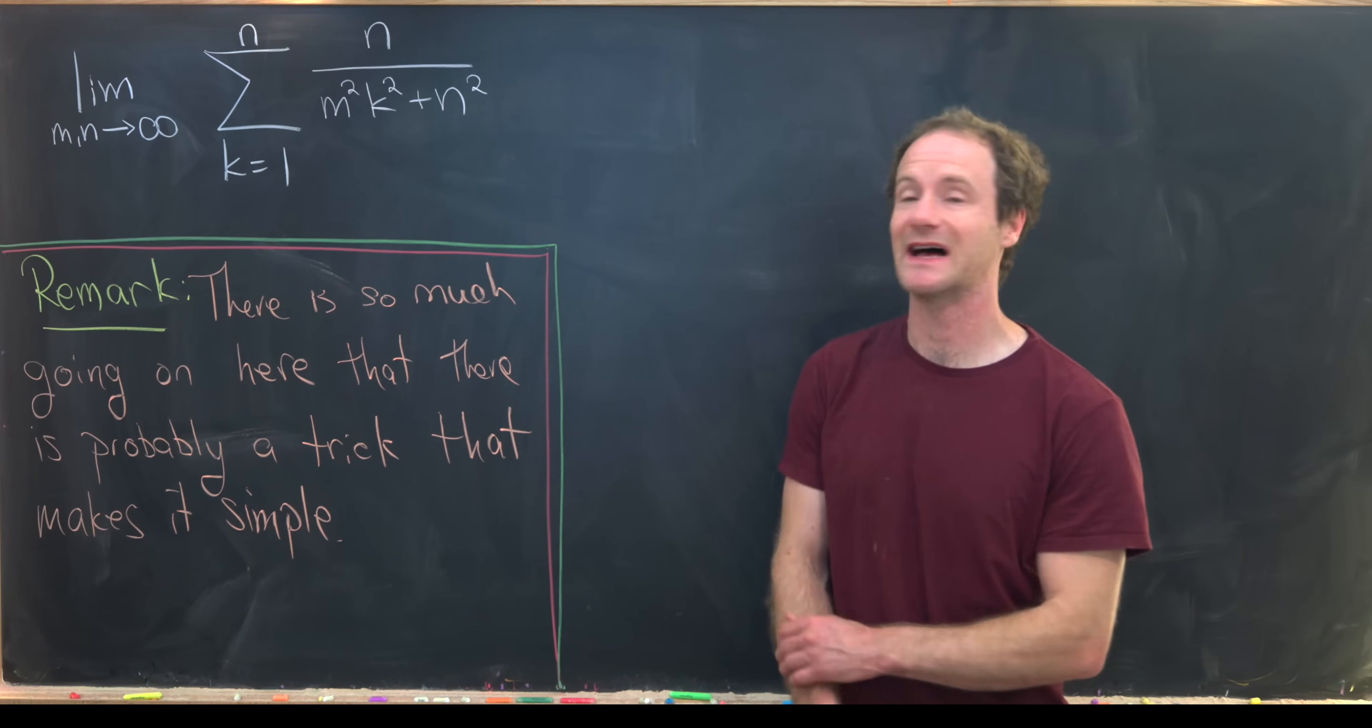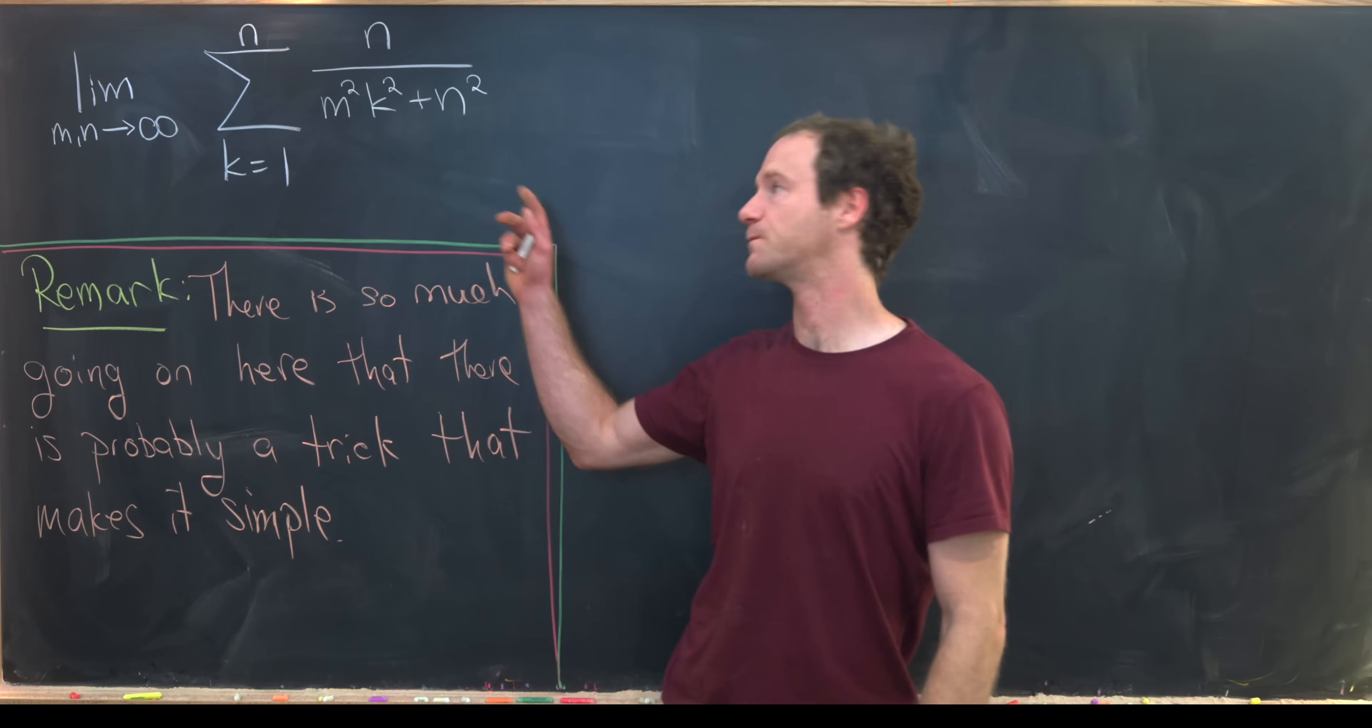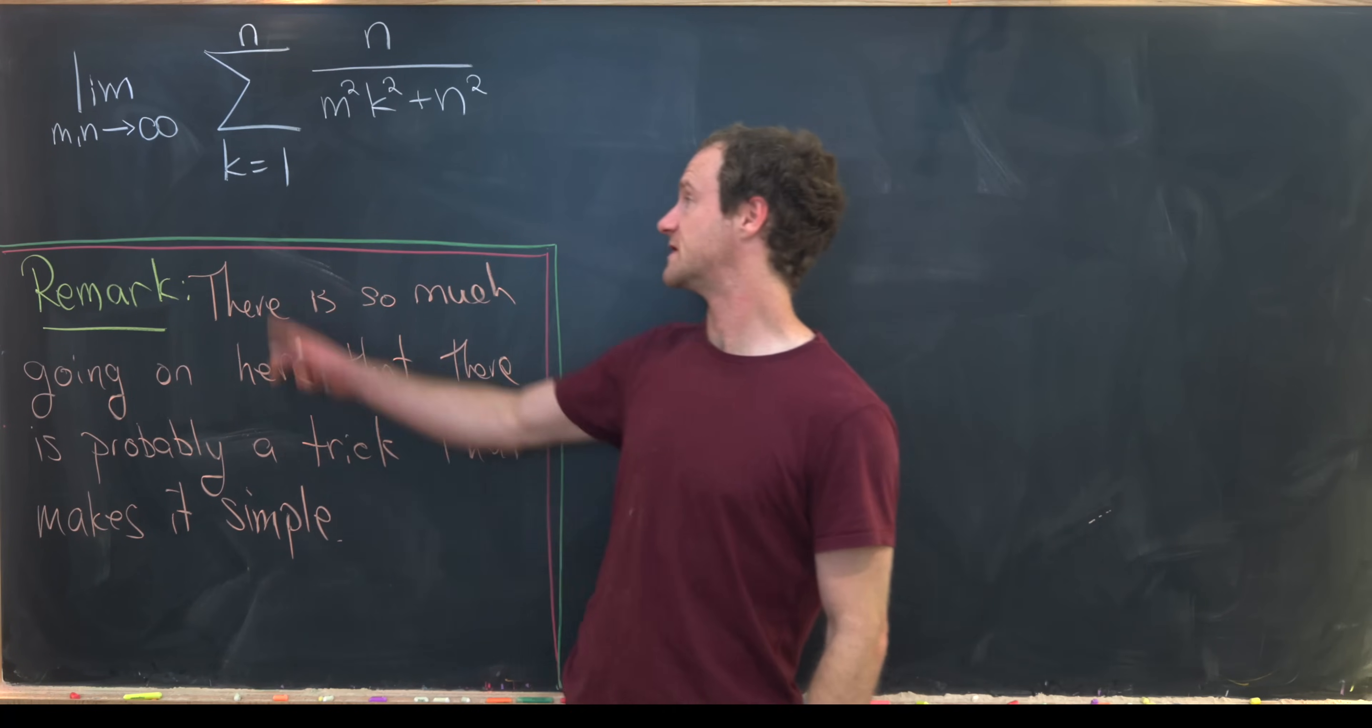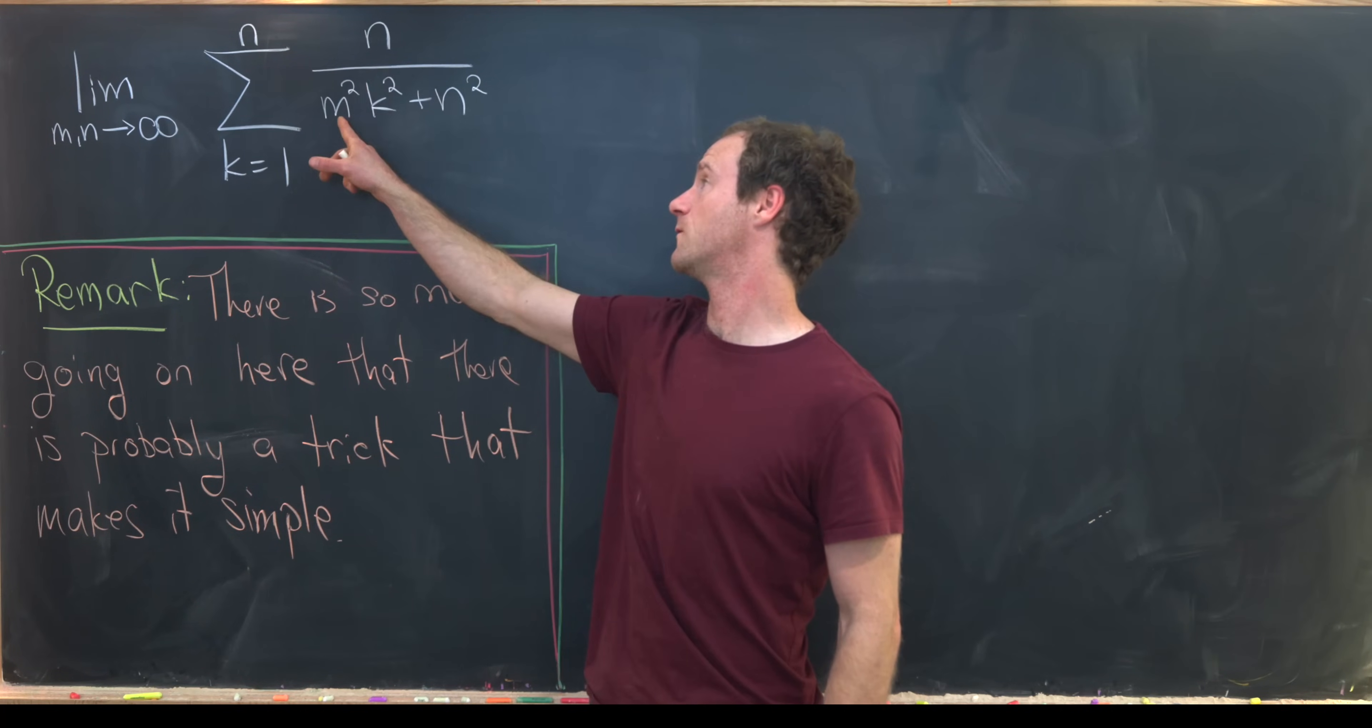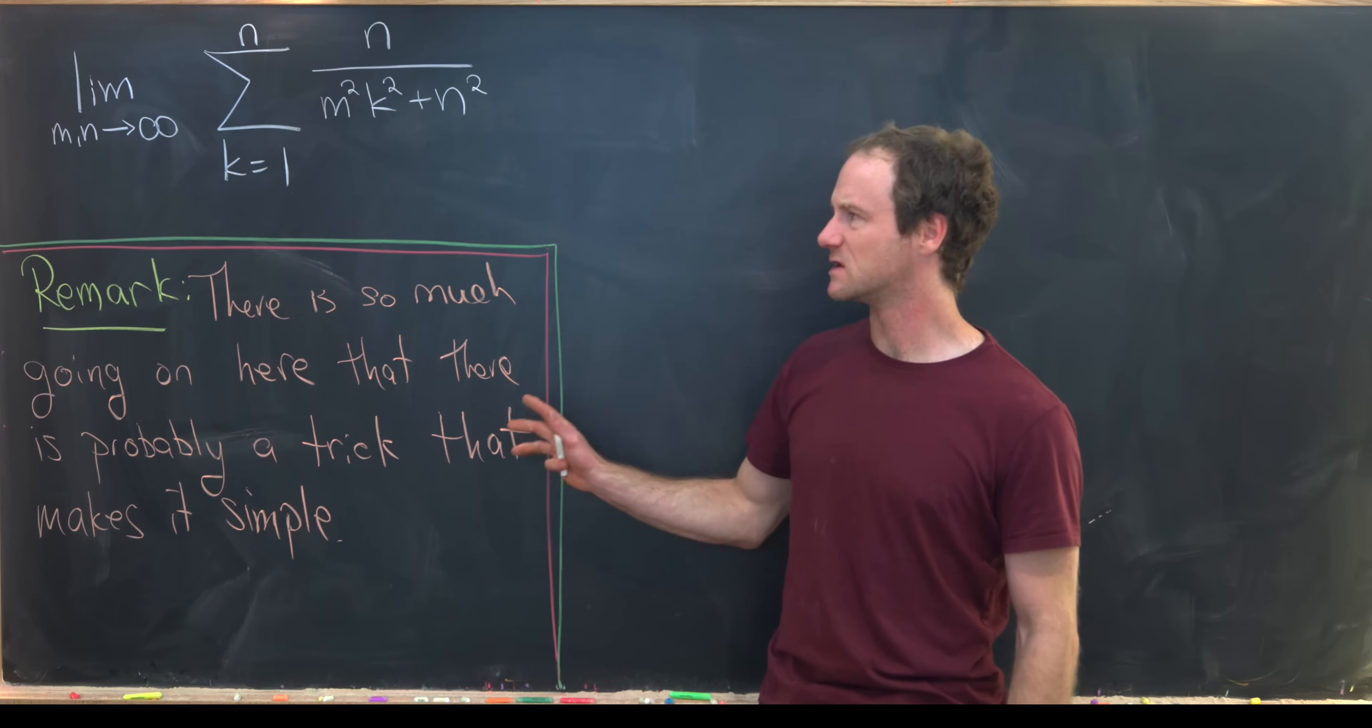Here we're going to look at a nice and classic infinite sum type problem. We've got this double limit as m and n go to infinity of the sum as k goes from 1 to n of n over m squared k squared plus n squared.